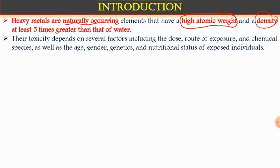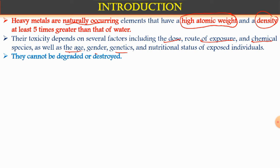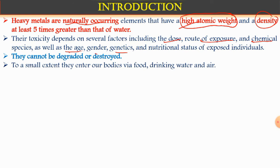Their toxicity depends upon the dose, the route of exposure — inhalation, ingestion, via food, etc. — as well as their chemical species and the age of the exposed individual. For example, older people, infants, and young people all differ. Based on age, gender, genetics, and nutritional status, the toxicity depends. They cannot be degraded — high atomic weight means they cannot be destroyed easily, which is why they are very dangerous to the environment.